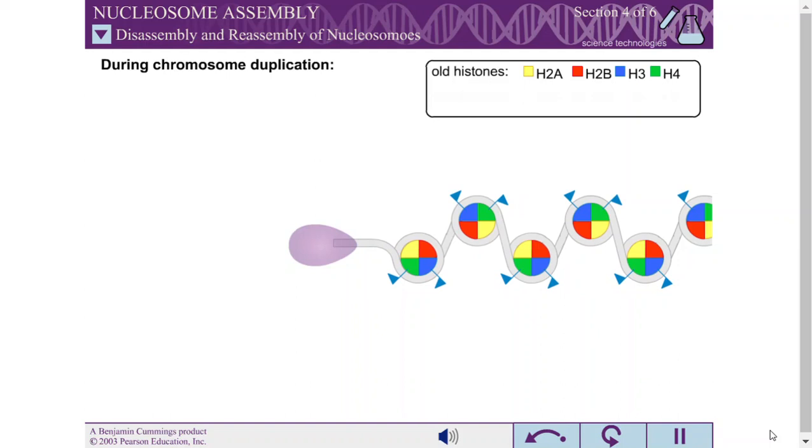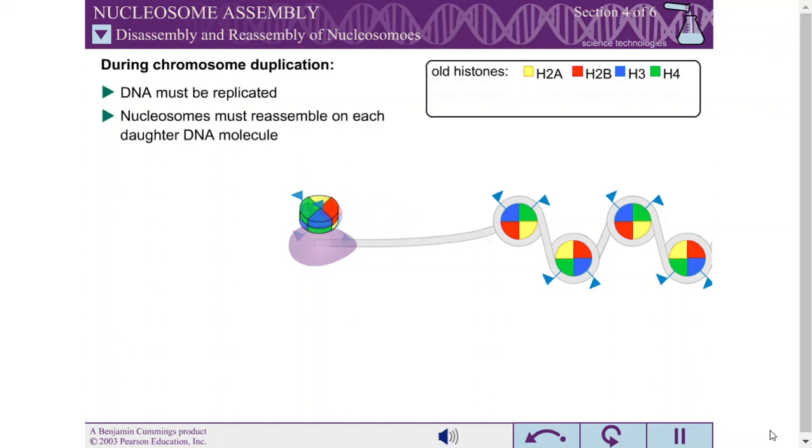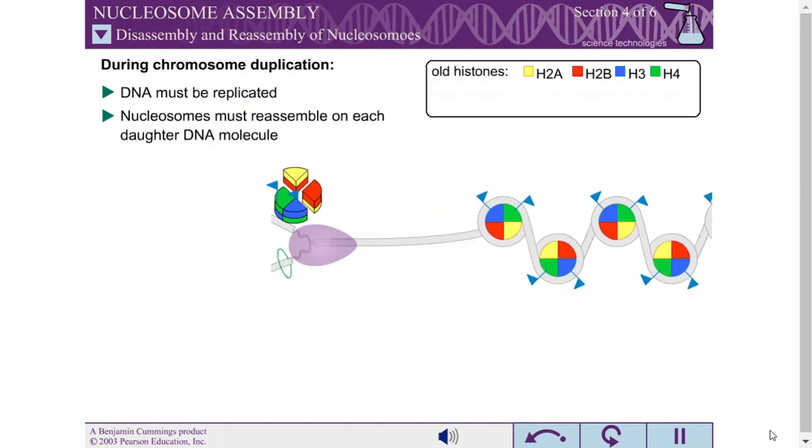When chromosomes are duplicated, the DNA must be replicated and the associated proteins must reassemble on each daughter DNA molecule. During replication, the nucleosomes must be at least partially disassembled to allow the replication machinery to pass.